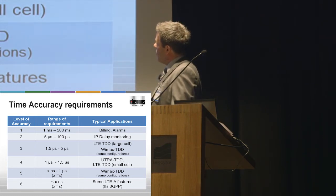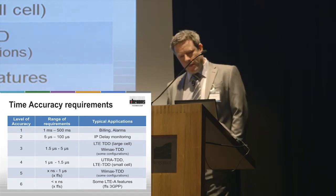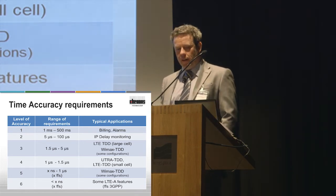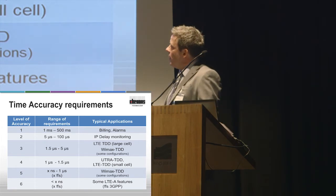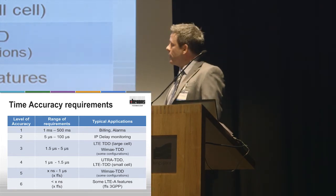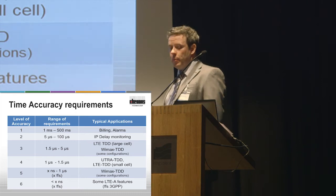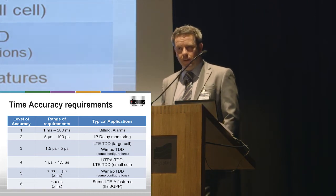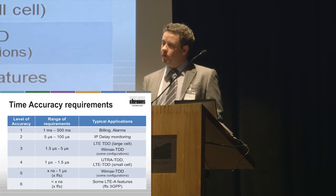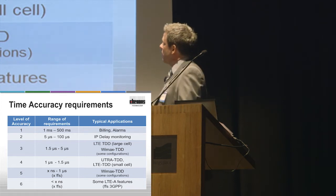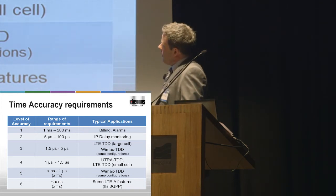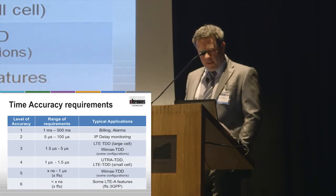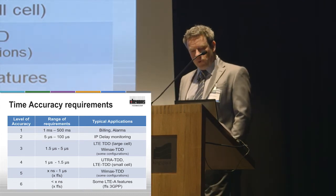IP delay monitoring - typically prior to metro Ethernet and carrier Ethernet large-scale deployments, in typical data networks, we were using NTP for IP delay and IP SLA monitoring using NTP version 3, which would give you sort of milliseconds, tens of milliseconds of accuracy. But as things have moved forward there are stricter, tighter requirements on those, and that's what the ITU is calling class 2.